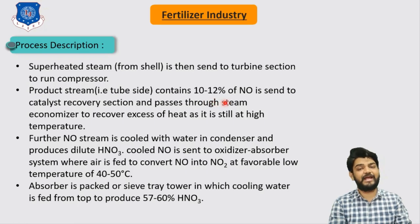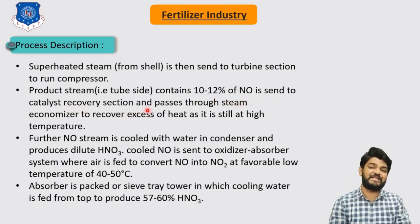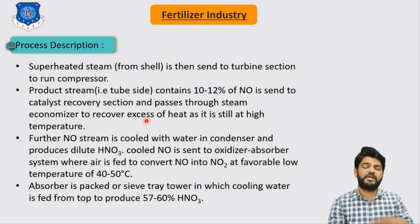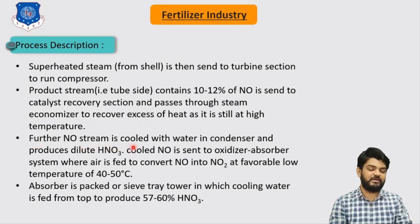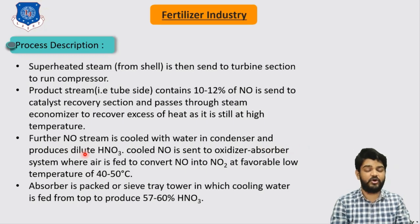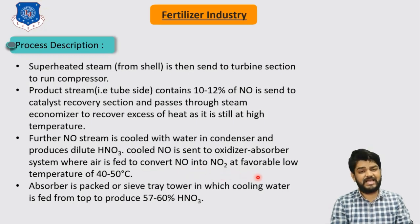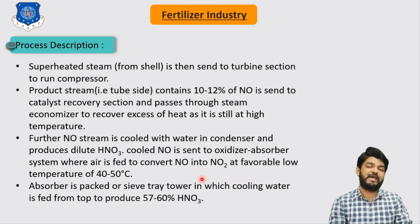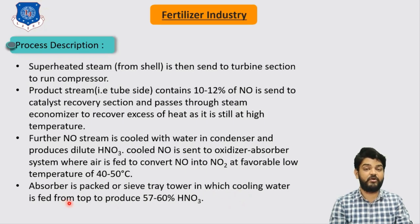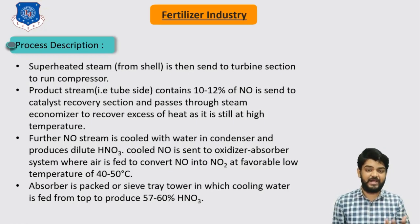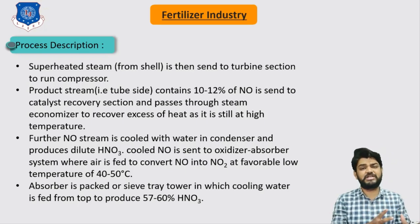The product stream contains around 10 to 12% NO and is sent to the catalyst recovery section to recover the precious platinum catalyst. It is then passed through the steam economizer to further recover heat. The NO stream is cooled with water, condensed, and produces dilute HNO3 of 9 to 10% concentration. The cooled NO is sent to the oxidizer absorption system where air is again fed to convert NO into NO2, and after this NO2 is absorbed in water to produce nitric acid. The absorber is a packed or sieve-tray type tower with cooling water circulated from the top, producing around 57 to 60% nitric acid.